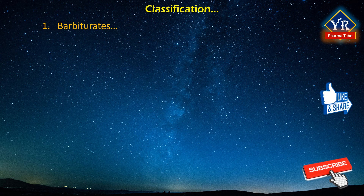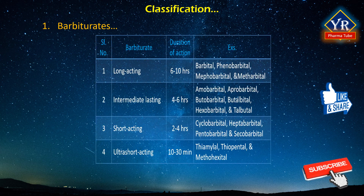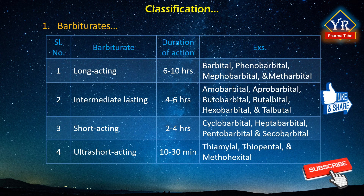The barbiturates are divided into four groups depending on their duration of action: long-acting, intermediate-acting, short-acting, and ultra-short-acting. The onset of action for long-acting barbiturates is visible only after an hour or so, and the duration of action lasts for 6 to 10 hours. They are largely excreted by the kidney. Examples include barbital, phenobarbital, mephobarbital, and metharbital.